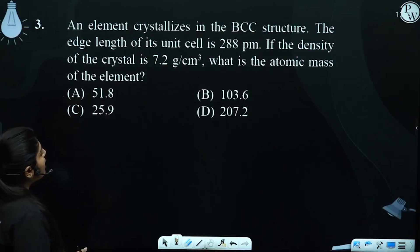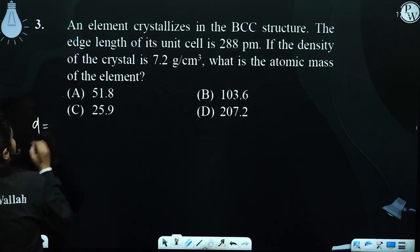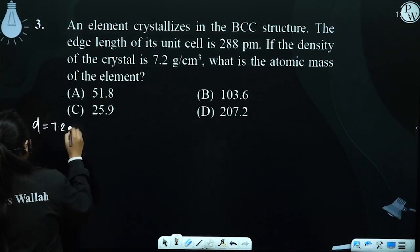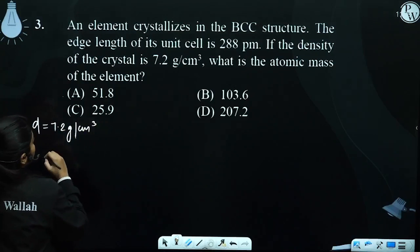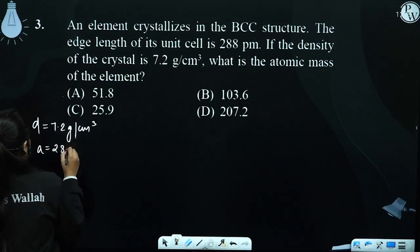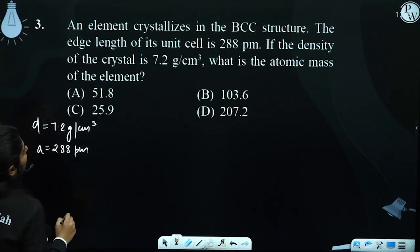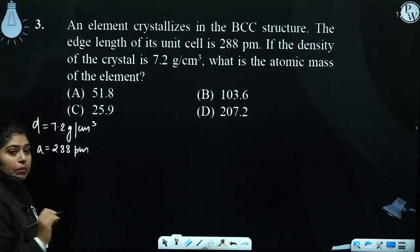What is given? We have given the density of this crystal: 7.2 gram per centimeter cube. And the edge length given is 288 picometers. What do we have asked? Atomic mass.